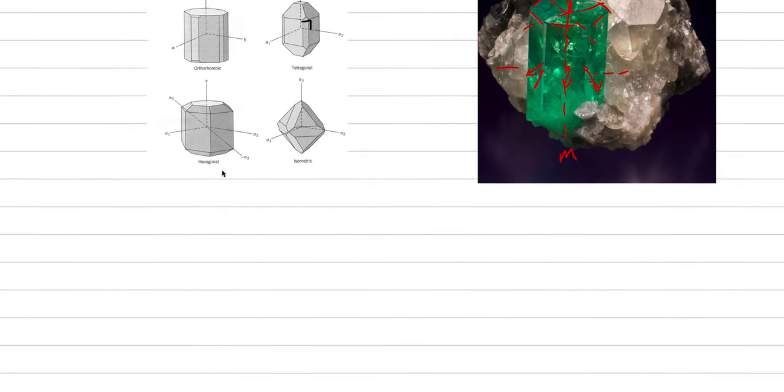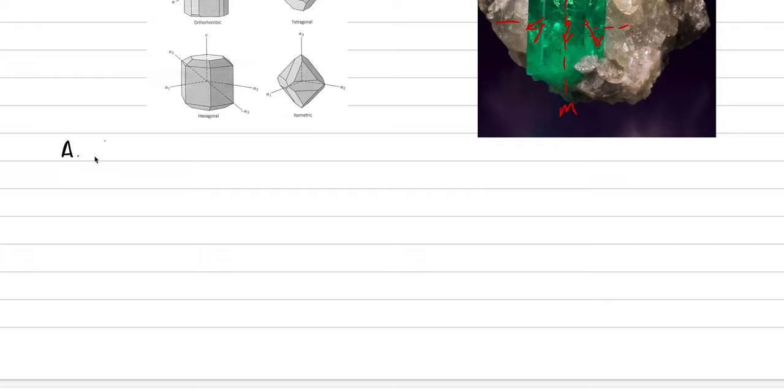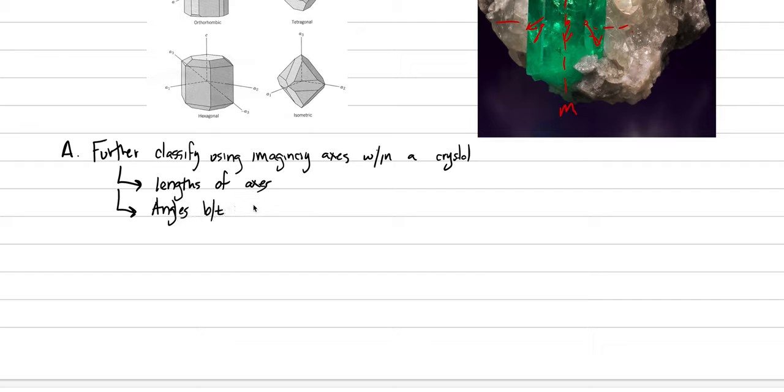If you can do that and recognize the lengths and the angles between these axes, like this angle here or this 90-degree angle there, then you're going to be very good at recognizing crystallography. So let's get started through this. This is Roman numeral 4, and we're going to put an A here, and we say that we further classify using imaginary axes within a crystal.